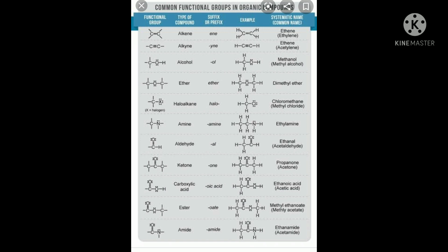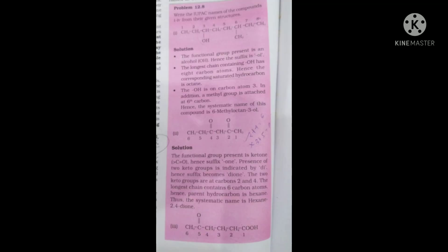Ester has the functional group C-O-C=O; it uses the suffix 'oate'. Amide has the functional group C(=O)-N; it uses the suffix 'amide'. We will do examples for functional group containing organic compounds next time.